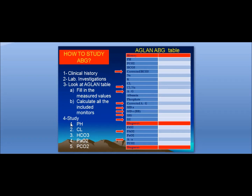There are four items to follow. First, listen carefully to the clinical history. Second, study the lab investigations including the ABG chart. Third, look at the AGLAM ABG table to fill in the spaces — both measured and calculated. Fourth, return to the AGLAM ABG table to study pH, chloride items, bicarbonate items, and the oxygenation and ventilation state of the lung.